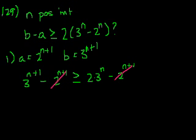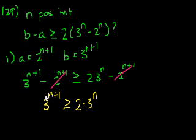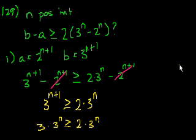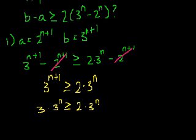And then our statement boils down to, is 3 to the n plus 1 greater than or equal to 2 times 3 to the n? We could rewrite 3 to the n plus 1 as 3 times 3 to the n. You can divide both sides by 3 to the n, and the statement boils down to 3 is greater than 2, which is absolutely correct. So statement 1 is enough information to say whether this statement is true or not, and actually it proves that it's true.